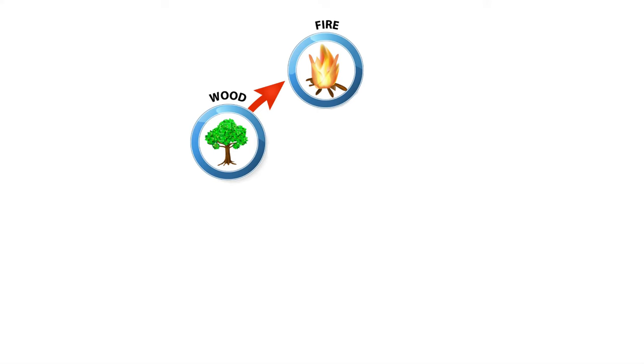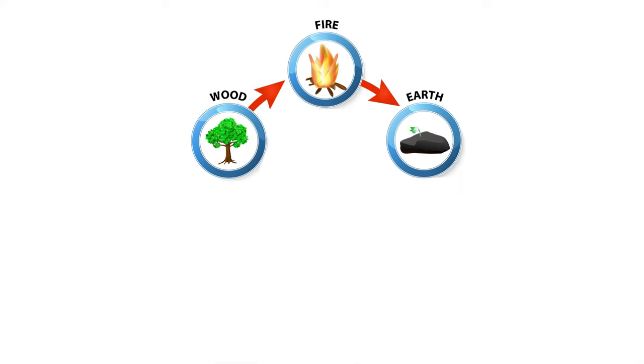The law of the generating cycle is: wood generates fire, fire generates earth, earth generates metal, metal generates water, and water generates wood. For example, wood can be burned to produce fire — thus wood generates fire. The burnt remains are transformed into ashes and absorbed back into the soil, which is earth — thus fire generates earth.